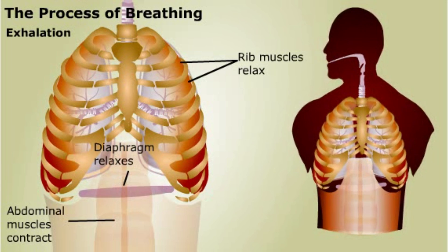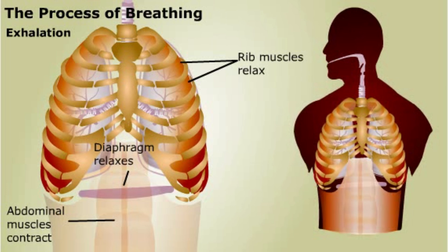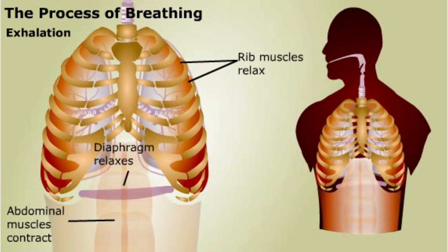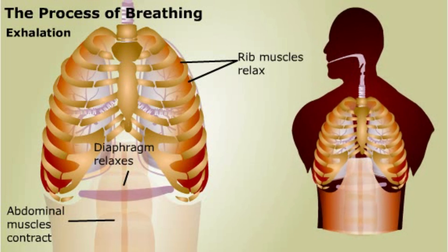With each breath, about 10% of the total lung capacity flows into and out of the lungs. Most people breathe between 10 and 20 times each minute, and the total volume of air ventilated per minute is about 8 to 10 liters.